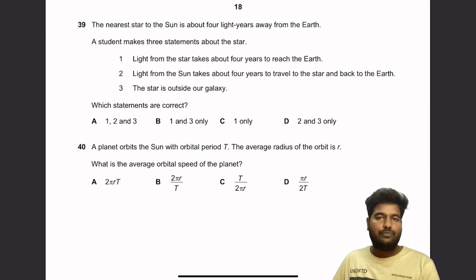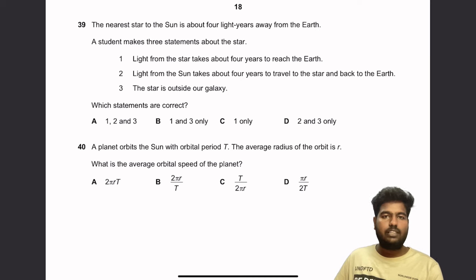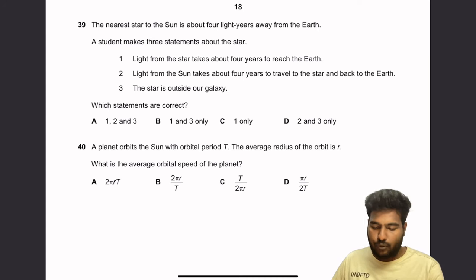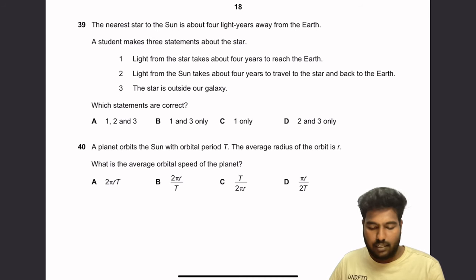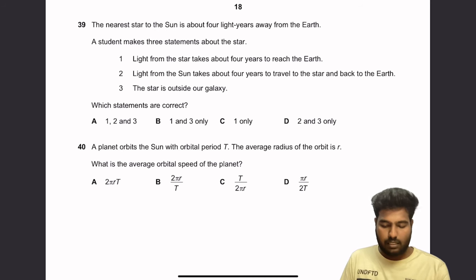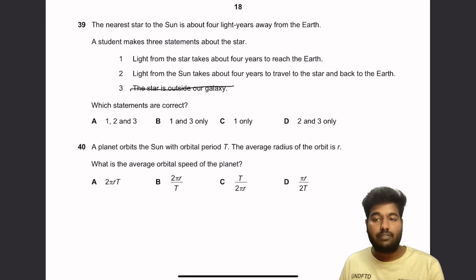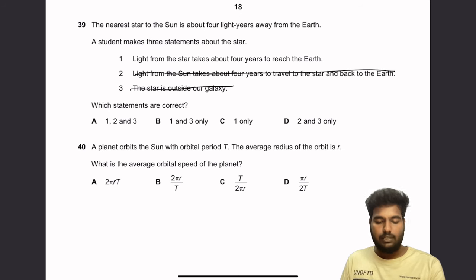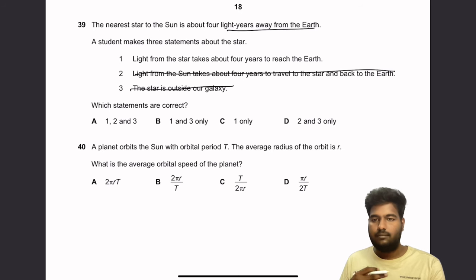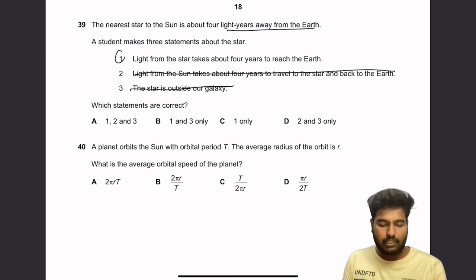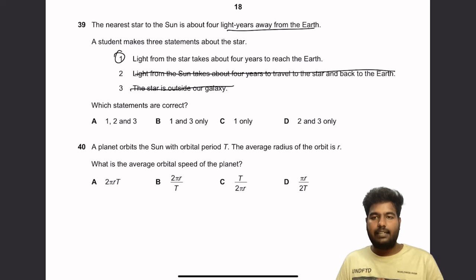Question 39: The nearest star to the sun is about 4 light years away from Earth. Statement 1: light from the star takes about 4 years to reach Earth — correct, that is the definition of a light year. Statement 2: light from the sun takes 4 years to travel to the star and back — incorrect, this confuses the star with the sun. Statement 3: the star is outside our galaxy — irrelevant without knowing the galaxy's size. Only statement 1 is correct.